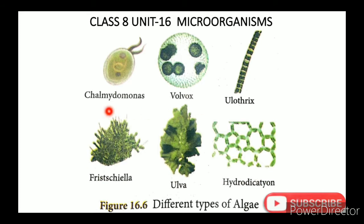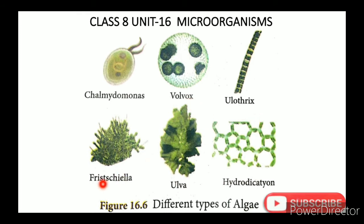Now let's look at different types of algae with pictures. The examples are: Chlamydomonas, Volvox, Ulothrix, Frizalia, Ulva, and Hydrodictyon. These are the main types of algae we will be studying.